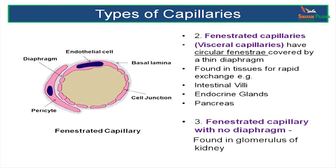The second type is the fenestrated capillary, also called the visceral capillary. They have circular fenestrae through and through the cells, usually covered by a single membrane called a diaphragm. These are found in tissues where rapid exchange is needed, like the intestinal villi, endocrine glands, and the pancreas. In some tissues like the kidney glomeruli, you get fenestrated capillaries without a diaphragm, where exchange takes place directly through the fenestrae.